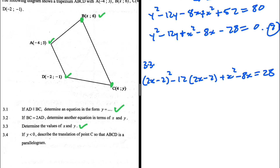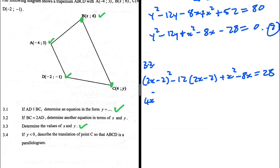Expanding (2x − 2)²: that gives 4x² − 8x + 4. Then −12(2x − 2) gives −24x + 24. Adding x² − 8x equals 28.